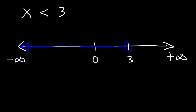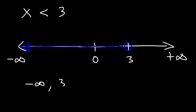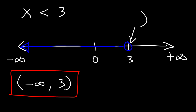Now when you need to write the answer in interval notation, you should write it from left to right — basically, just write the way you see it. So the first number is negative infinity, that's the number on the left. The number on the right, where the blue line ends, is 3. So it's from negative infinity to 3. You should always use parentheses next to an infinity symbol, and we have an open circle, so that's also going to be parentheses. So the answer is negative infinity to 3, written as (-∞, 3).